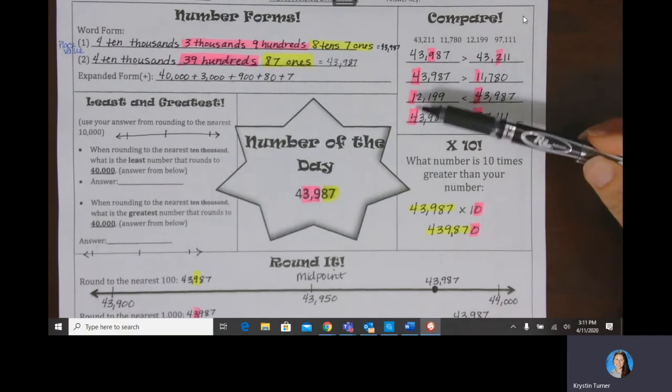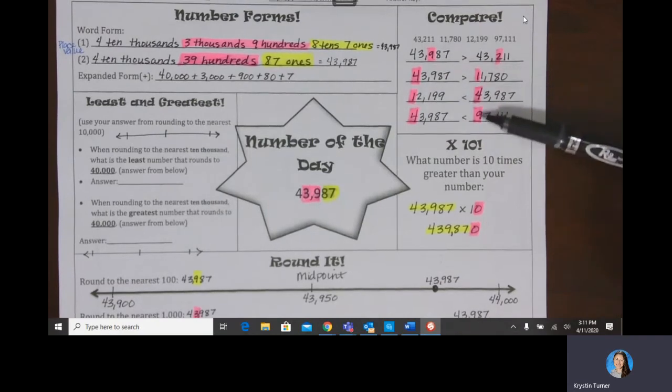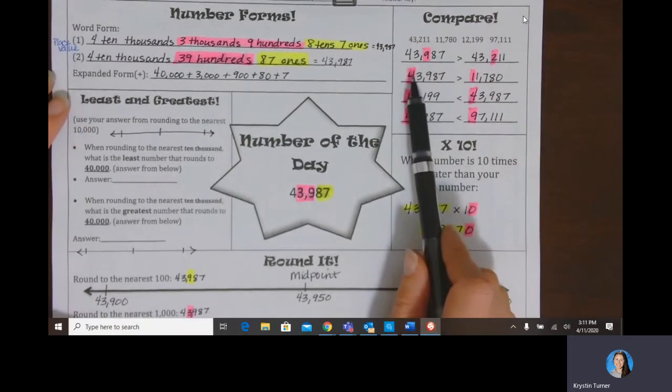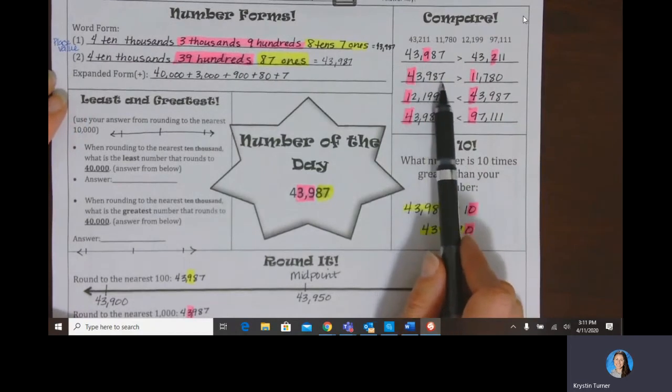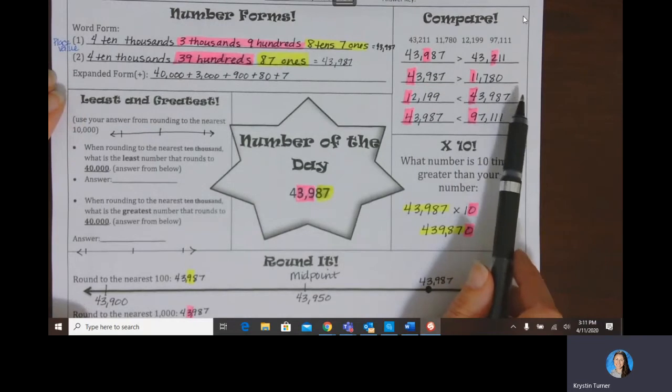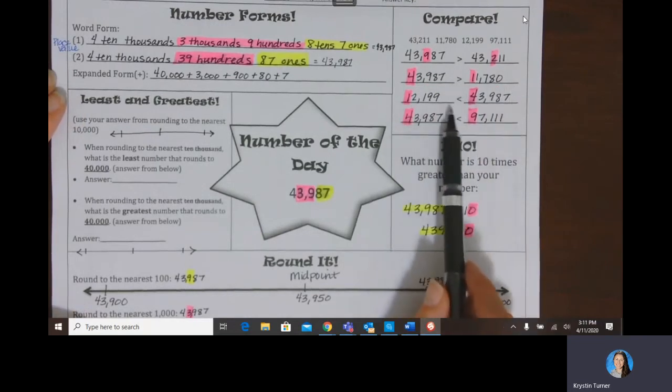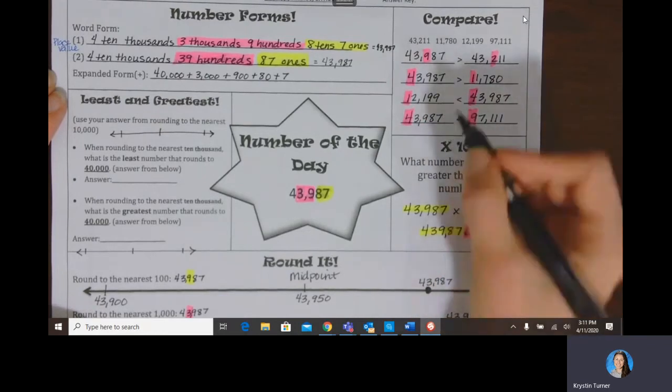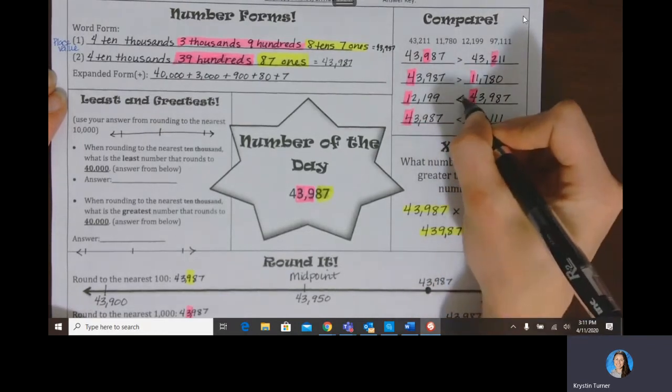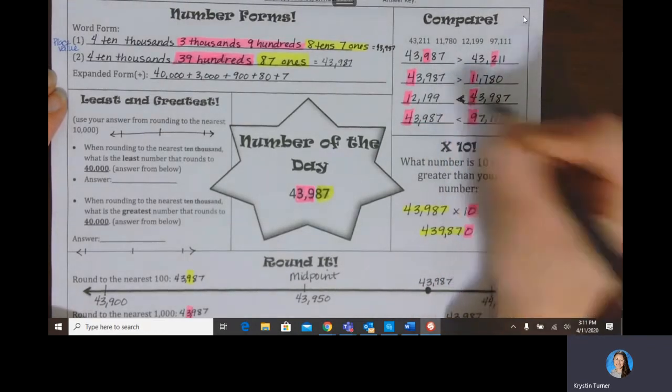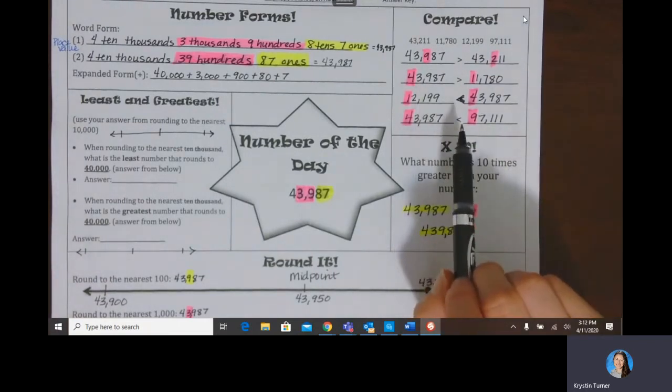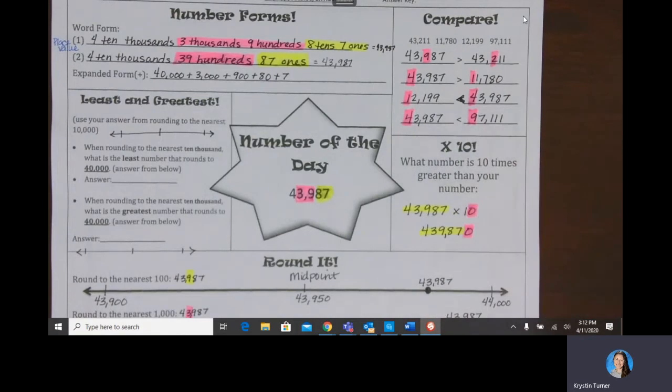The rest of them, I could just compare in the largest place value 10,000 because one was clearly larger than the other. So then 43,987 is greater than 11,780. 12,199 is less than 43,987. Remember the crocodile always eats the larger of the two. And then 43,987 is less than 97,111.